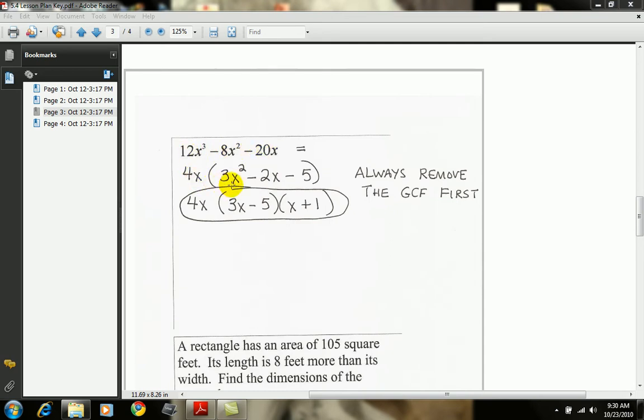In parens, we're left with 3x squared minus 2x minus 5. The 4x stays in front, but this trinomial can be factored as 3x minus 5 times x plus 1.